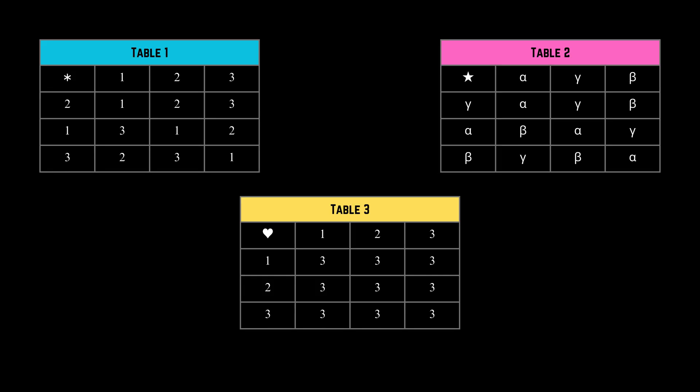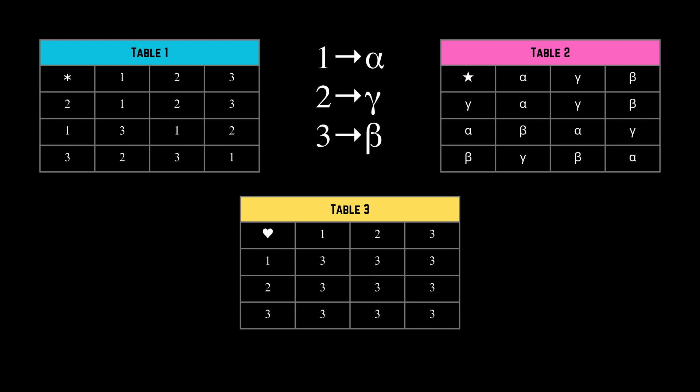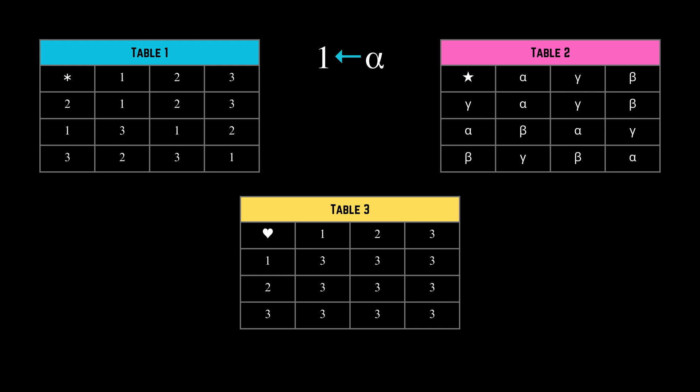Now why is this concept of a structure important? Consider the following three tables. Take a look at table 2 — if you notice, it is pretty much the same as table 1, with the exception of the values: we replaced every instance of 1 by alpha, every occurrence of 2 by gamma, and every 3 by beta. Thus we established a one-to-one correspondence where alpha maps to 1, beta maps to 3, and gamma maps to 2. The only difference in the two tables are the symbols, and hence they are structurally alike. Now consider the third table for the binary operation heart — since the body of the table only contains the single number 3, it is structurally different from the other two tables. This is one example of what we mean by structure.